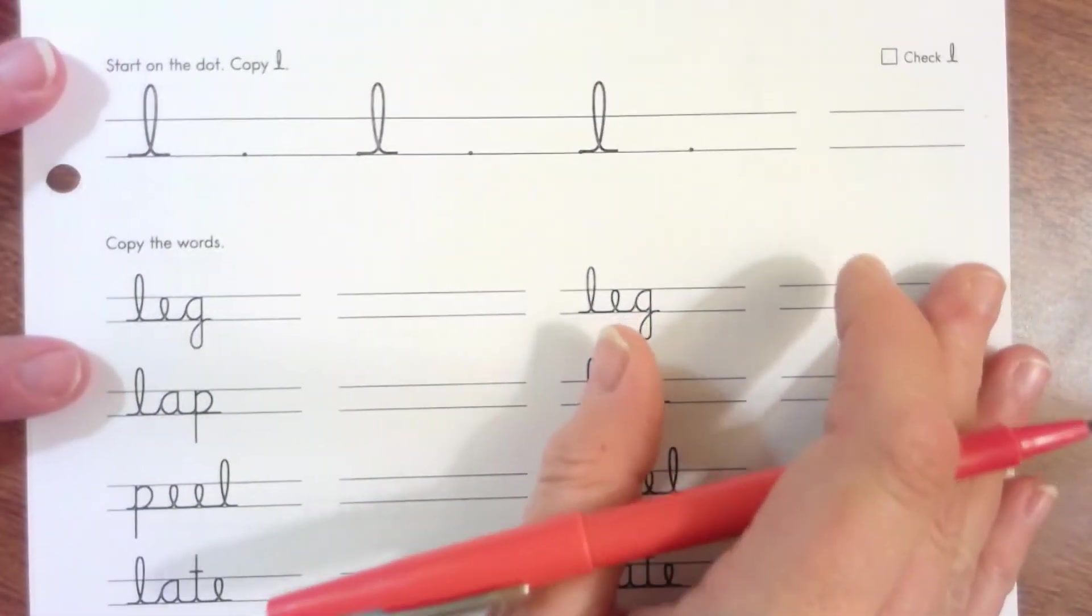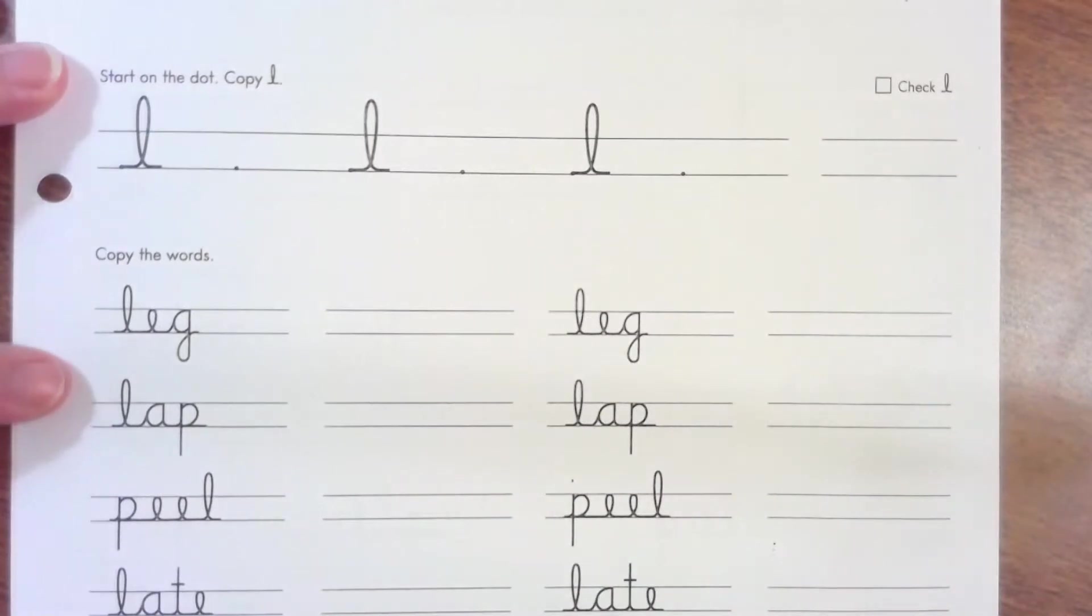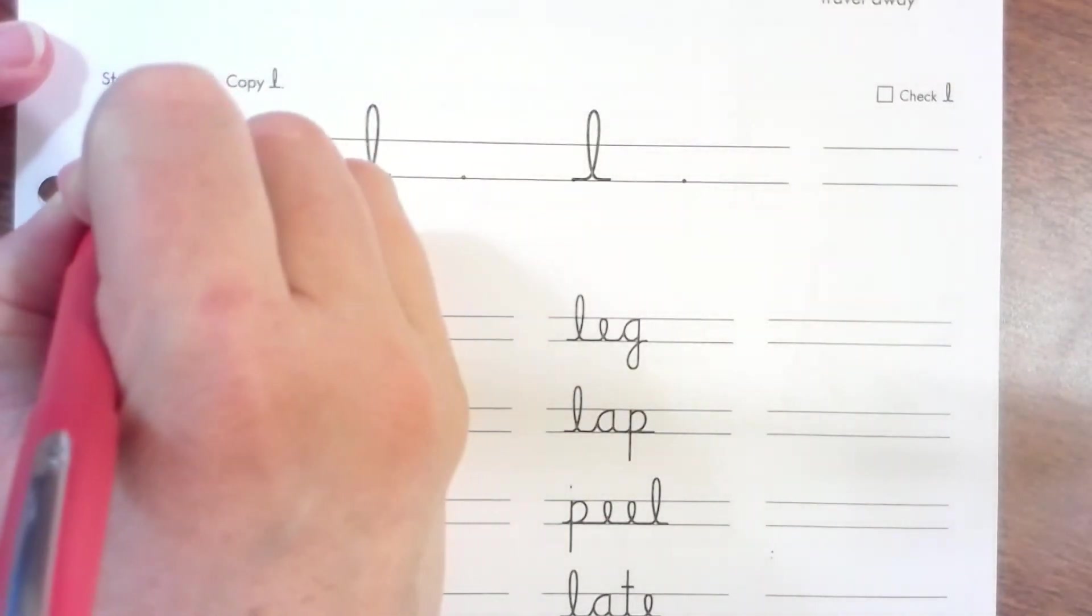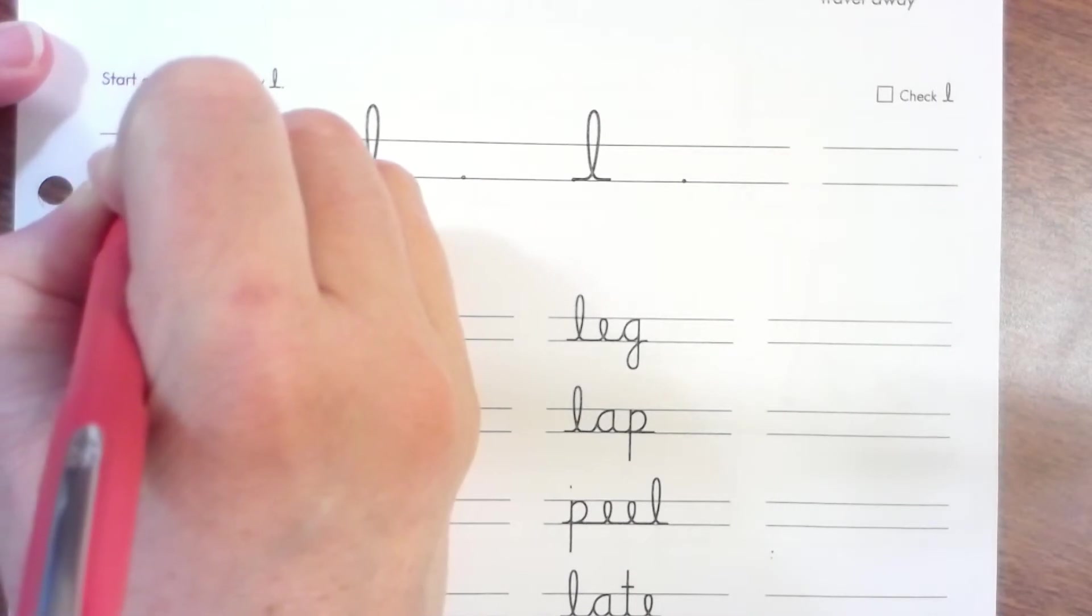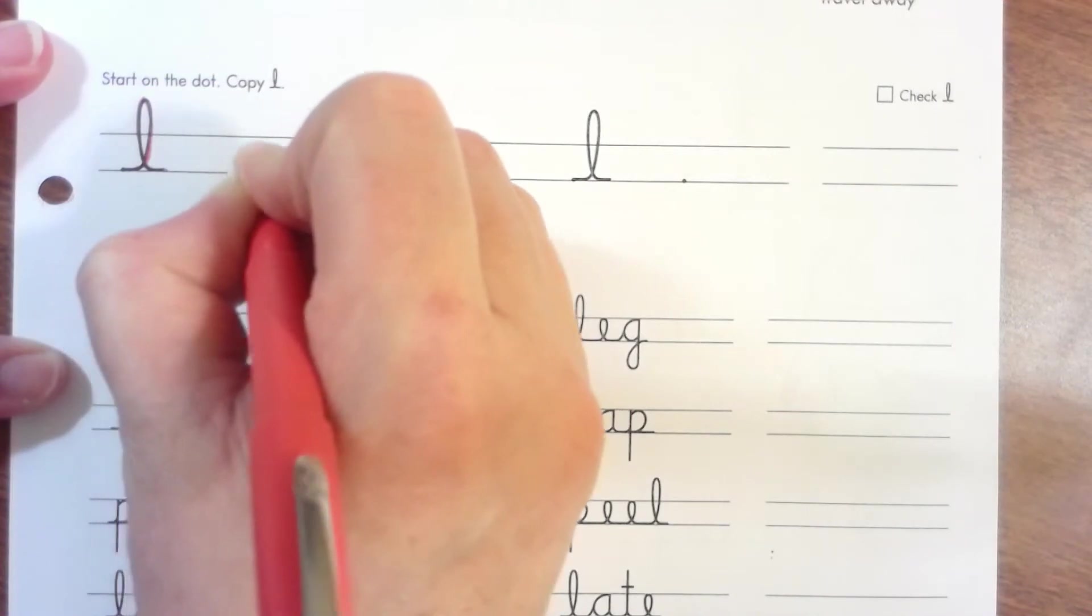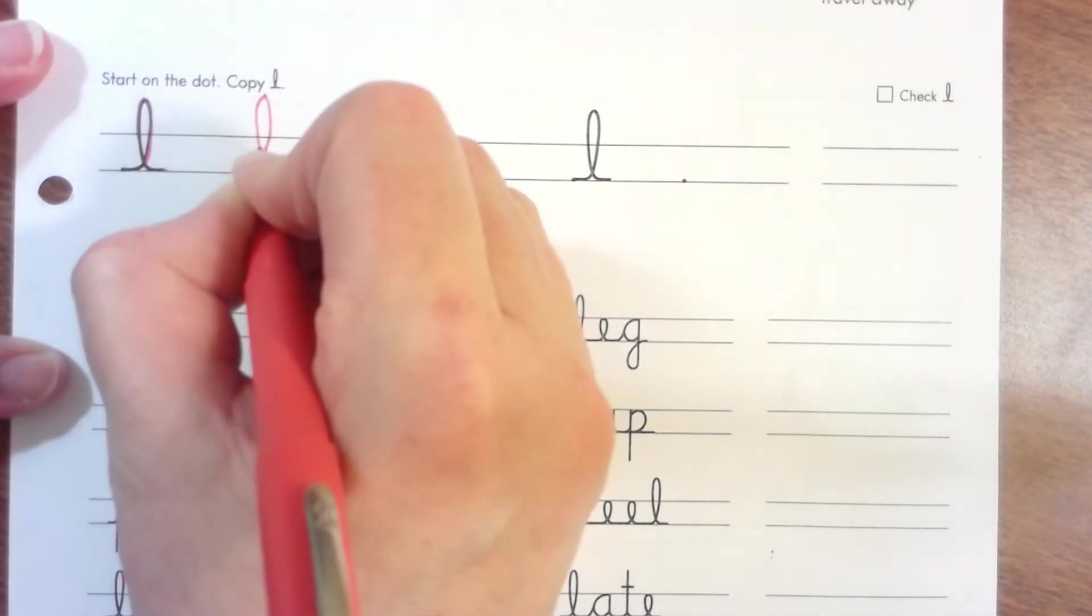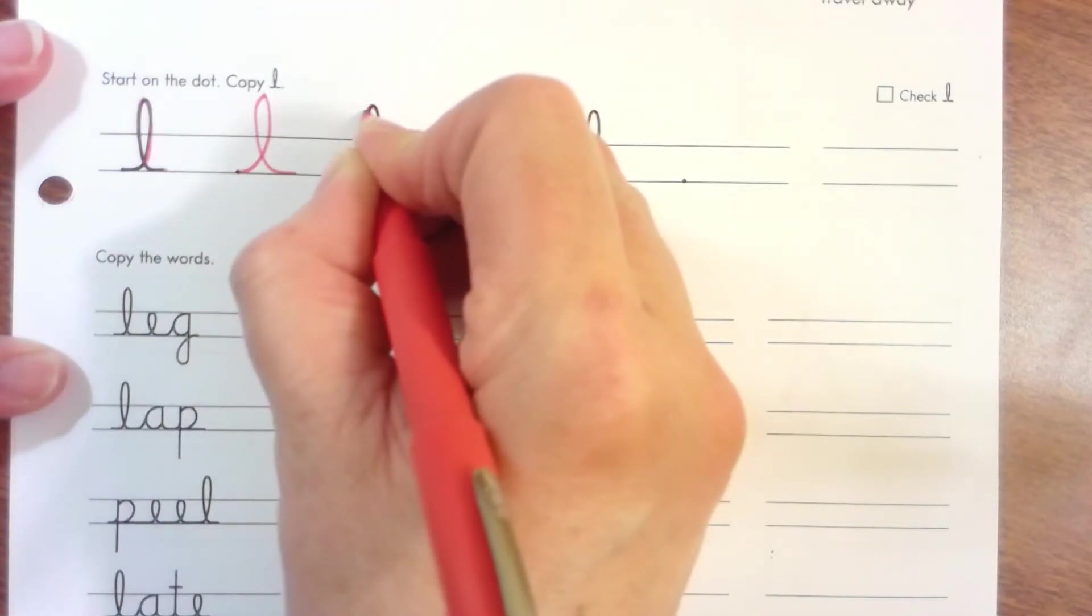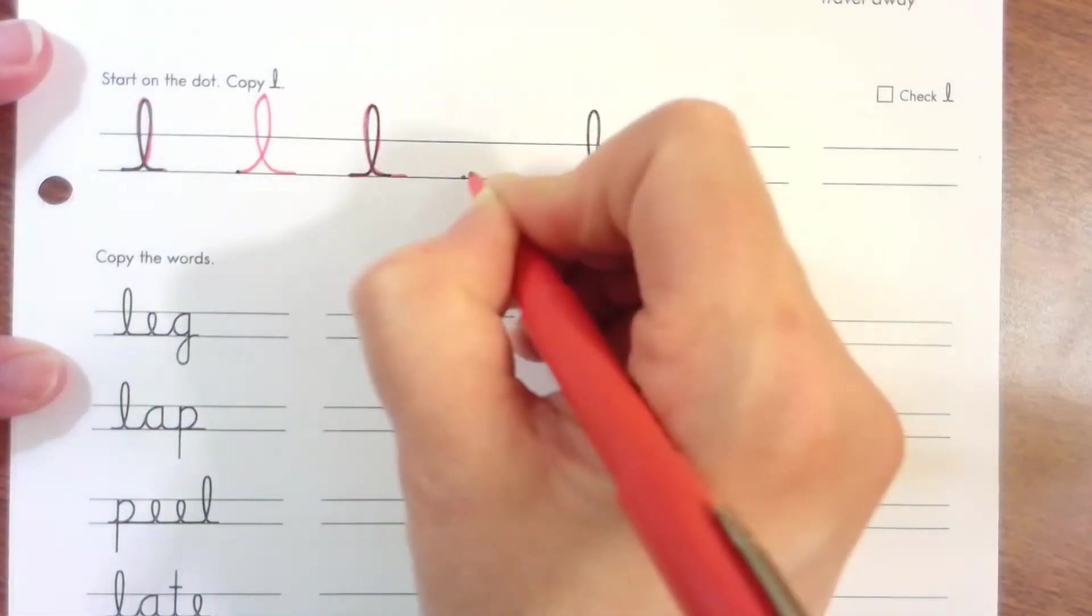Let's try this, remember muscle memory to help those little muscles in your hand to memorize the direction. Start at the dot, travel then up, turn and travel back down. Start at the dot, travel then up, turn, travel back down. Start at the dot, travel up, turn and travel down.